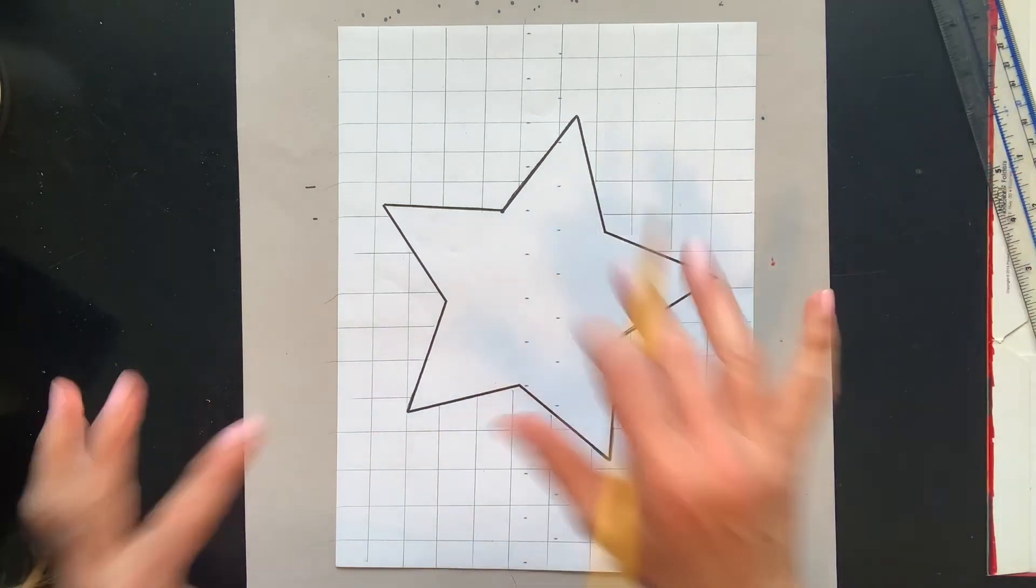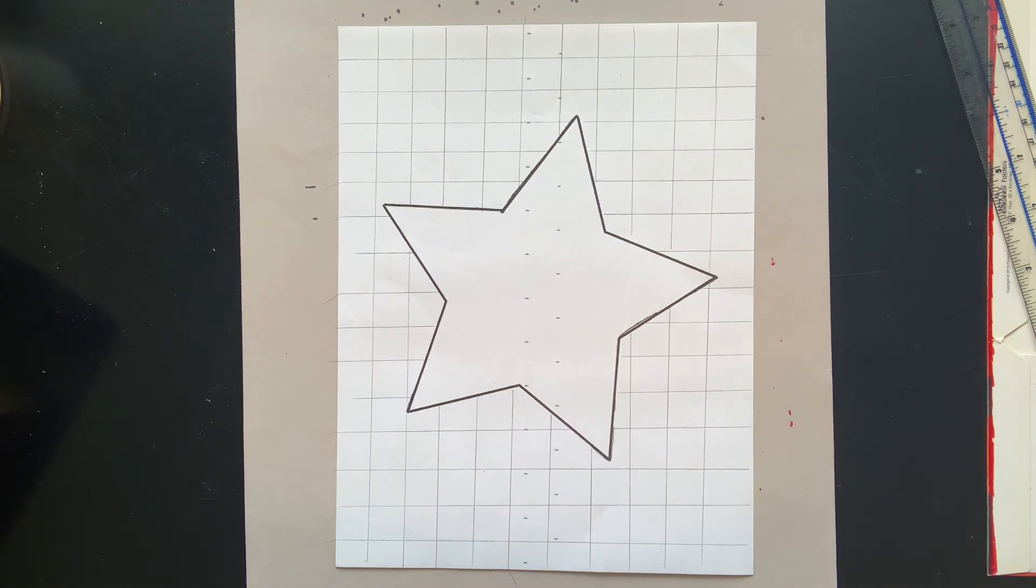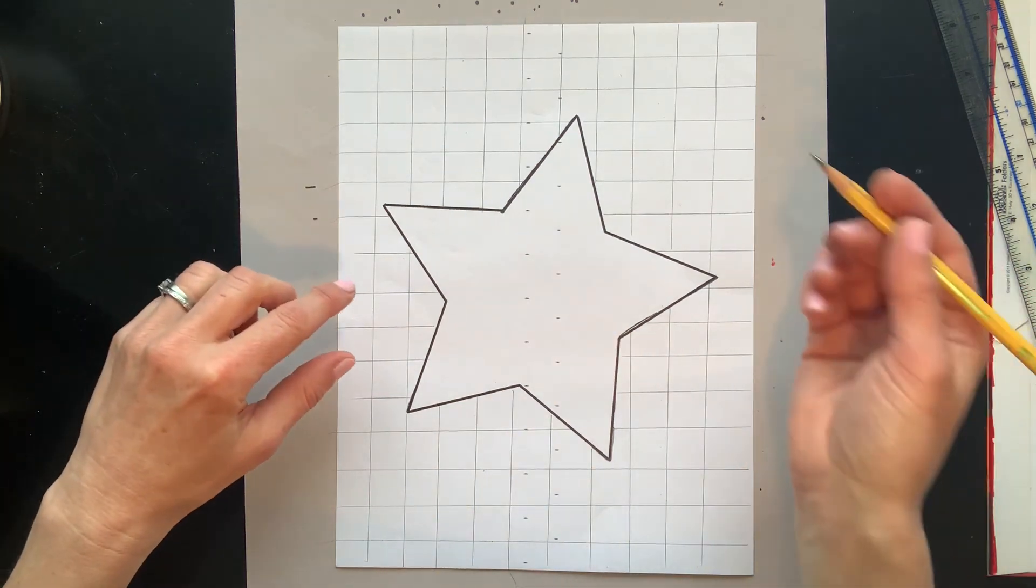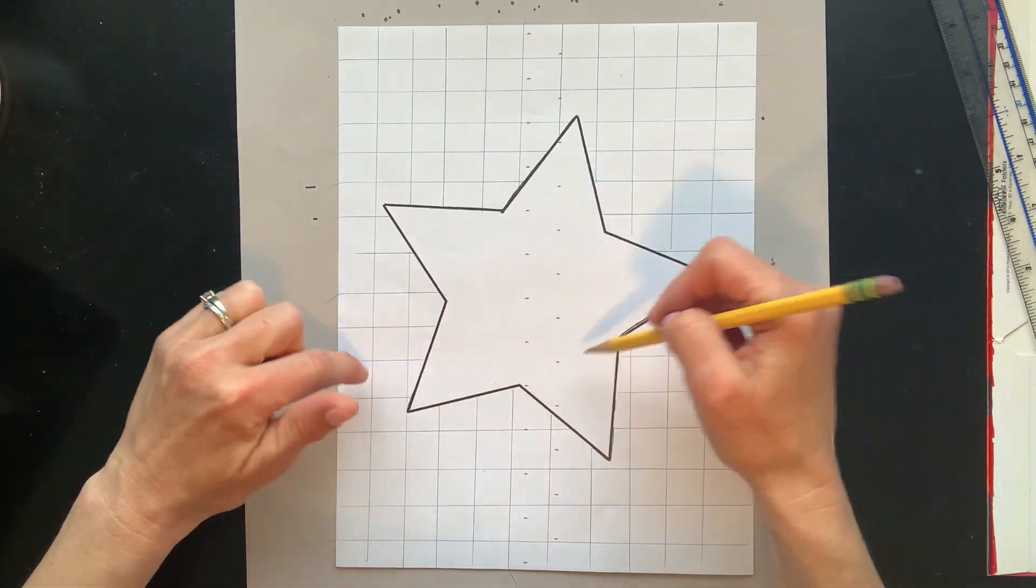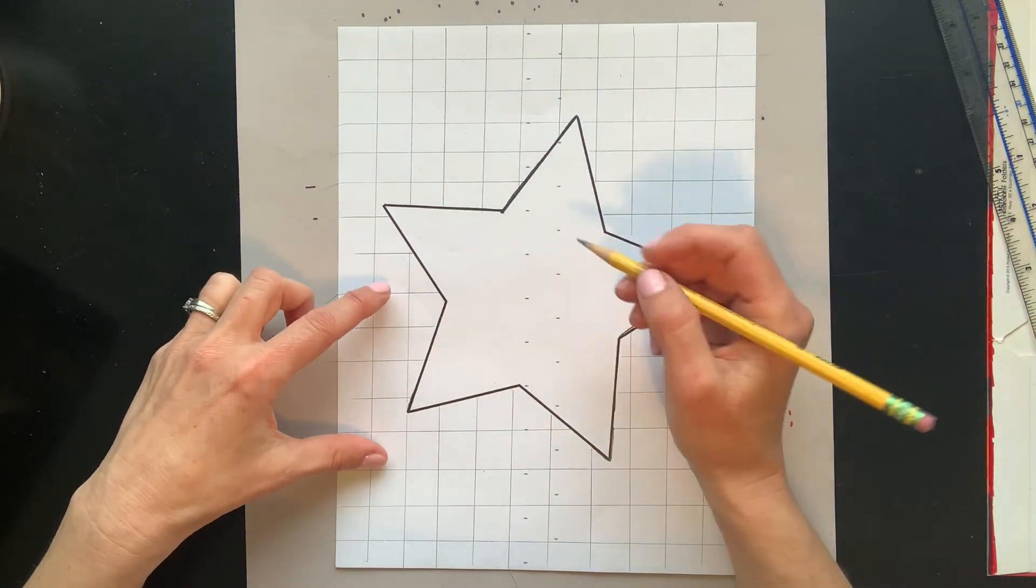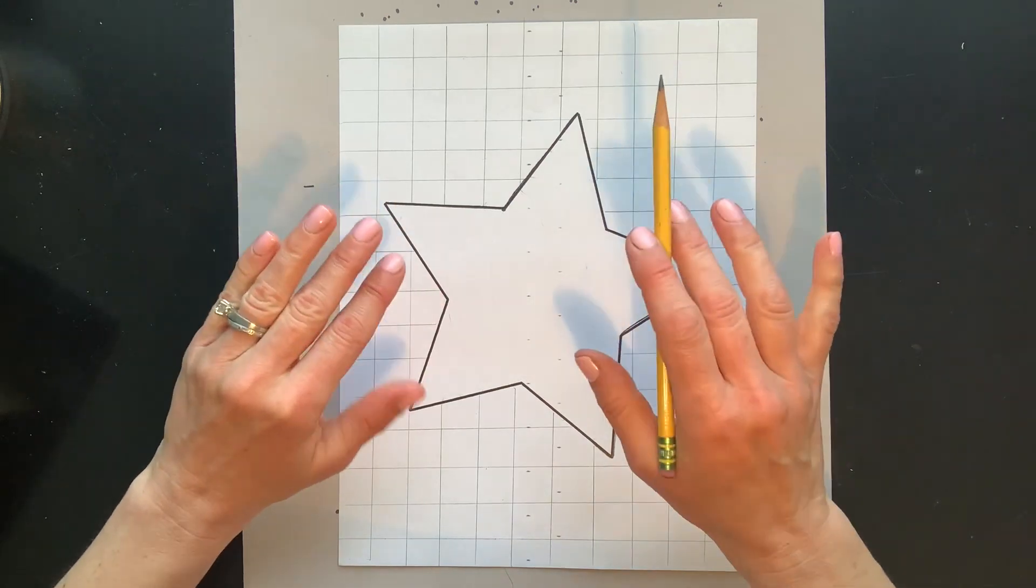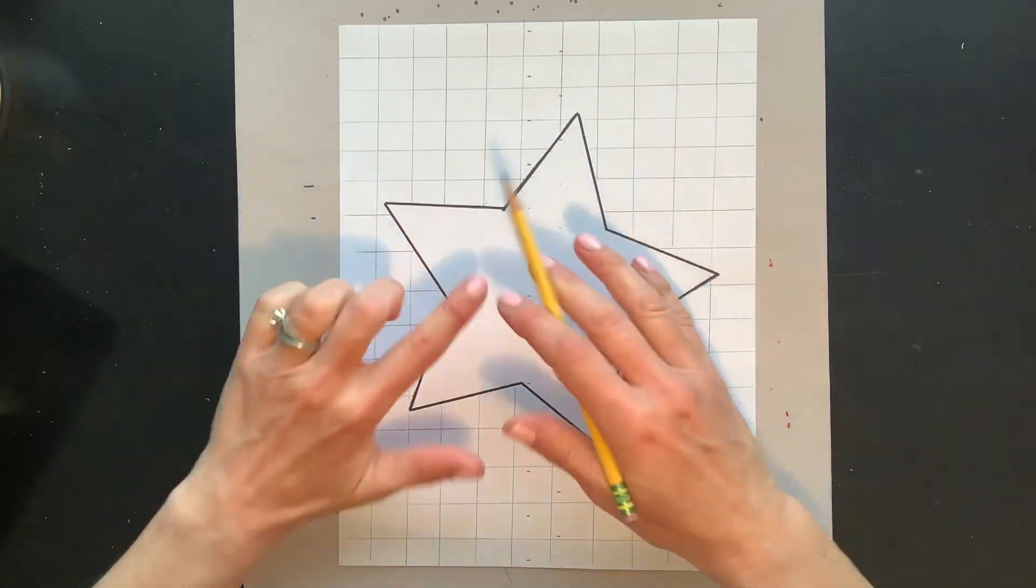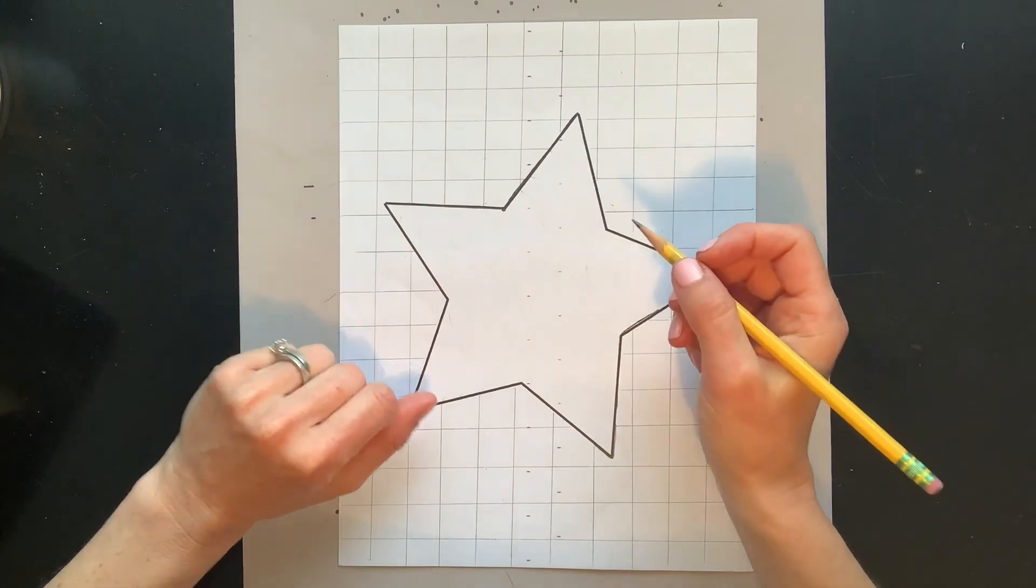Okay, so we have our checkerboard in the background. Now we need to create our lines for the star. To create an optical illusion, we need to now curve these lines, so it looks like it's popping out towards us. Flat lines are going to make it look flat. Curved lines are going to have the appearance of it coming out towards you.